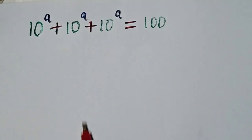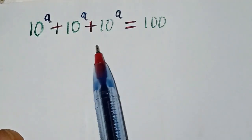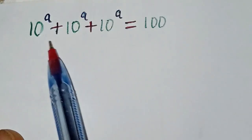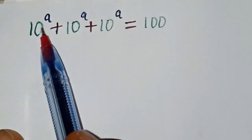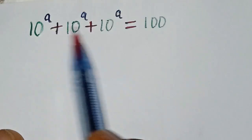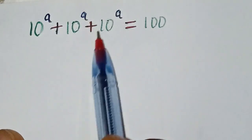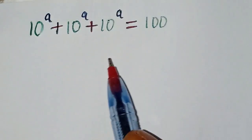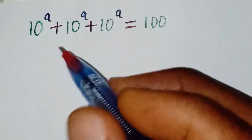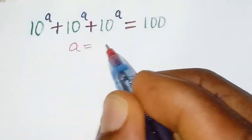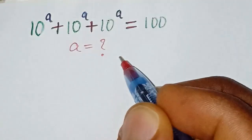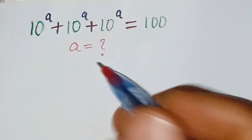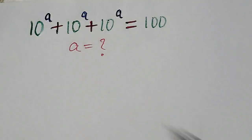Hi everyone, we have a nice Olympiad question here. We have 10 to the power of a, plus 10 to the power of a, plus 10 to the power of a, equals 100. What would be the value of a? It is not given, so we need to find the value of a. Solution.